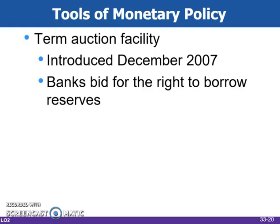The term auction facility is another way that the Fed can alter bank reserves. Twice a month, the Fed auctions off the right for banks to borrow reserves for 28 and 84 day periods. This tool allows the Fed to guarantee that the amount of reserves it wishes to lend will be borrowed and therefore will be available as excess reserves in the banking system to increase lending.